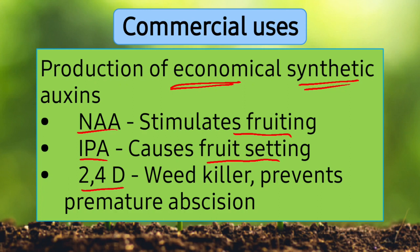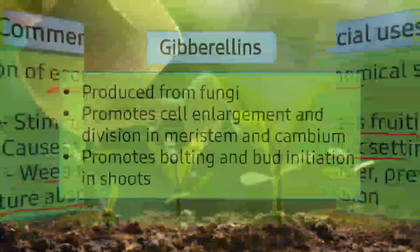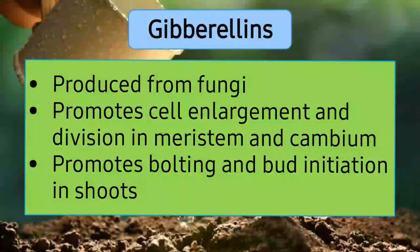2,4-dichlorophenoxyacetic acid is a weed killer. Weeds are the unnecessary plants that grow in our crops, and this auxin variant is used to eliminate them. It also prevents premature abscission of fruits in different plants. So these are the commercial uses of auxins.